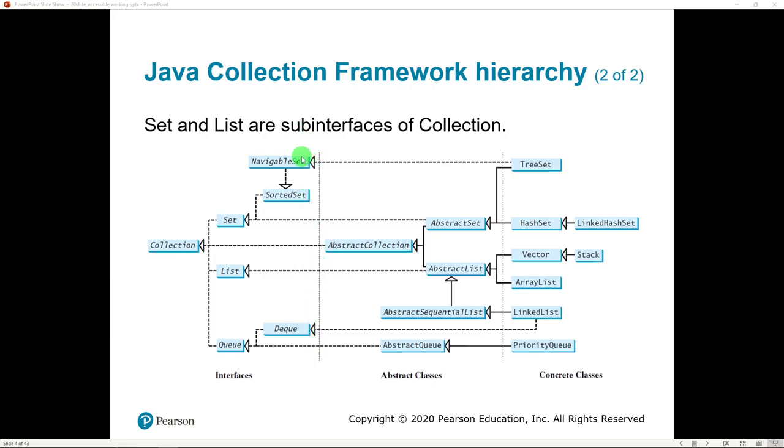Everything to the left of this dotted line are interfaces. If you remember, an interface is a contract - you're defining, hey, if you want to be part of a collection, for example, you have to implement this method and this method and this other method. That's all it says - we don't write the implementation of those.